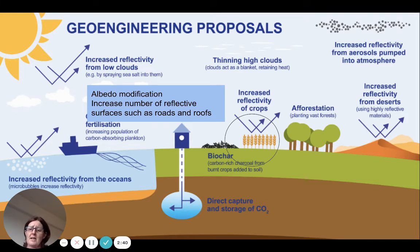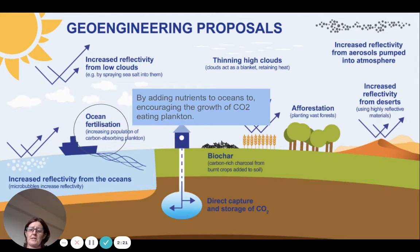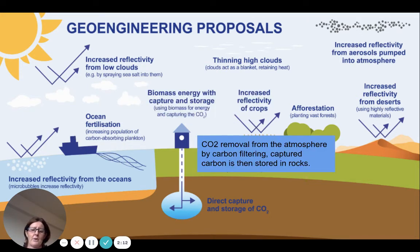Another strategy is to increase albedo levels, modifying the level of reflectivity. Roads could be much lighter — not using fresh dark asphalt but a lighter form of concrete — along with white buildings and green rooftops. Ocean fertilization, adding nutrients to the ocean, would encourage the growth of CO2-eating plankton.